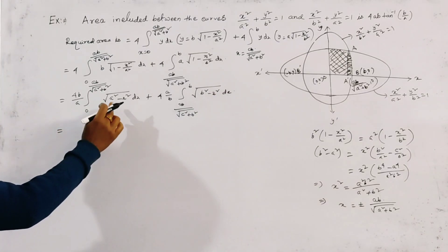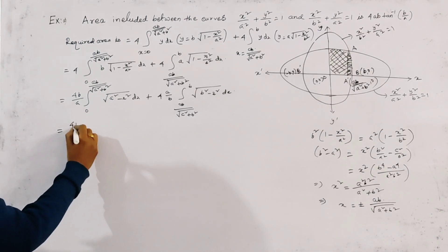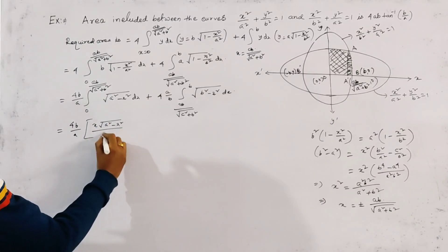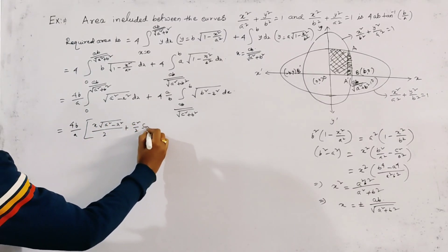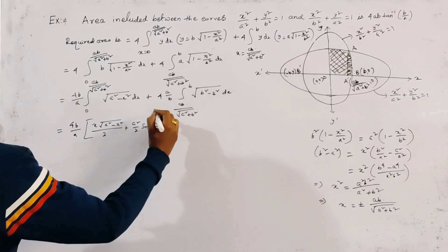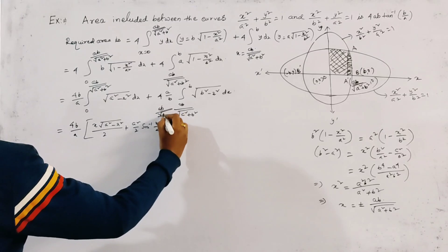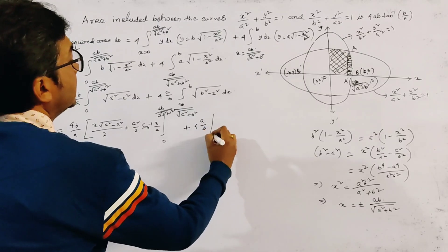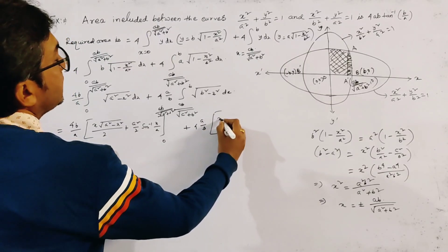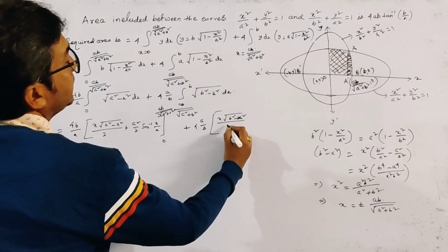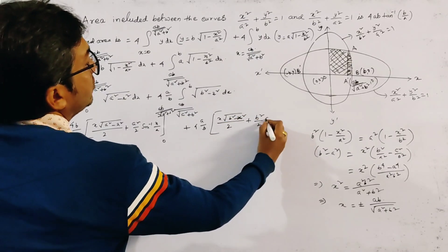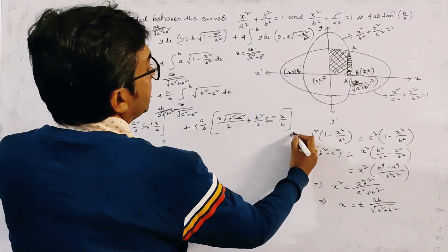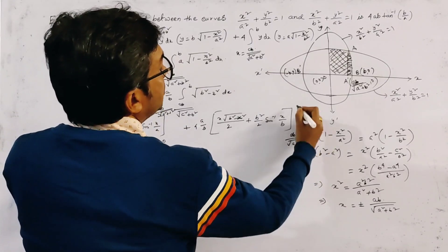Now the standard formula is applied. For the first integral, the formula gives (b/a) times [x√(a² − x²)/2 + a²/2 · sin⁻¹(x/a)], evaluated from 0 to ab/√(a² + b²). For the second integral, (a/b) times [x√(b² − x²)/2 + b²/2 · sin⁻¹(x/b)], evaluated from ab/√(a² + b²) to b.